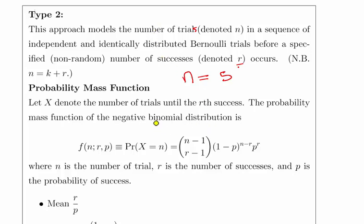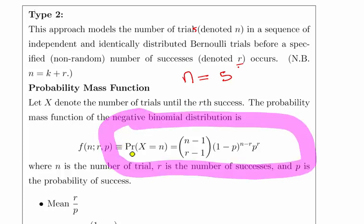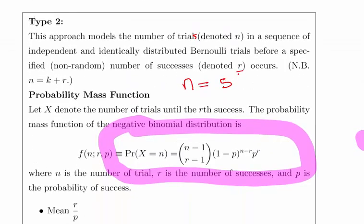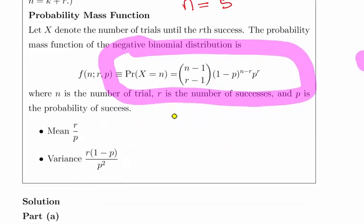That's the probability mass function there, and it's the same sort of construction. Just as a remark, the numbers are slightly different when compared to the previous Type 2 case, so don't get them mixed up. The mean here is R over P, and the variance is R times (1-P) over P squared.